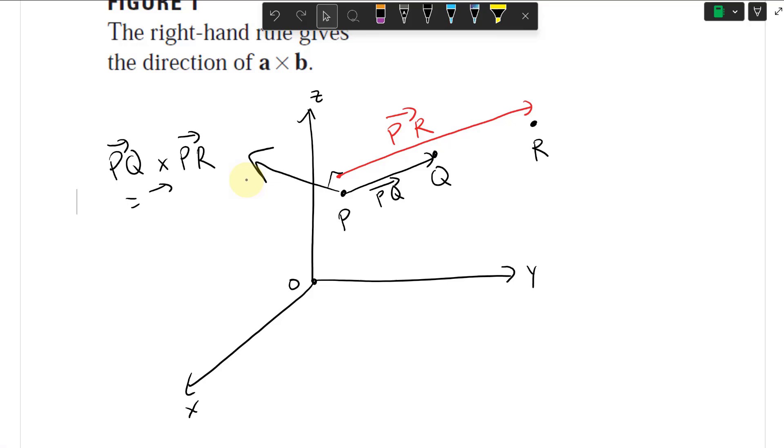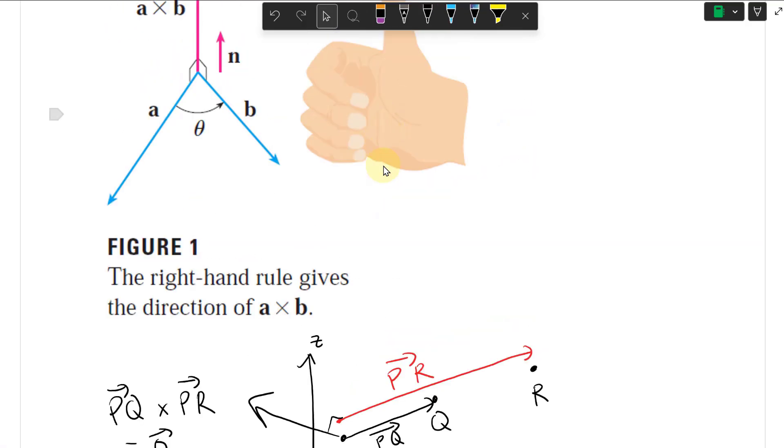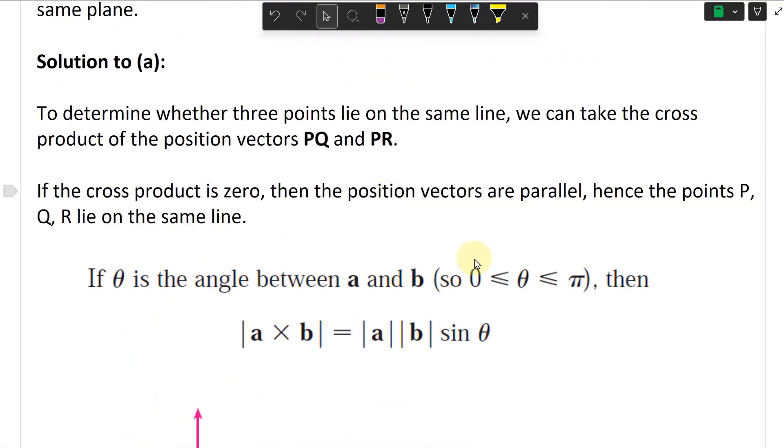So that's going to be zero. So the angle is actually zero. So you're just going to have like this and this. PQ, PR. So the angle is zero between them. So those are parallel. So this is going to be zero.